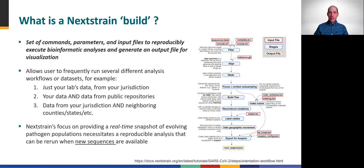A central concept in Nextstrain is that of builds. You'll hear and see these referenced frequently, so let's stop for a definition. A Nextstrain build refers specifically to a set of commands, parameters, and input files to reproducibly execute bioinformatic analyses in Augur and generate an output JSON file for visualization that gets read by Auspice. This conceptual approach to data analysis is very useful because it prioritizes reproducibility. For example, you may have multiple comparisons that you run frequently, and each of these could be managed as separate builds and run at the same time.